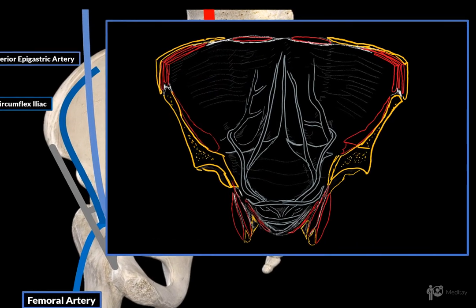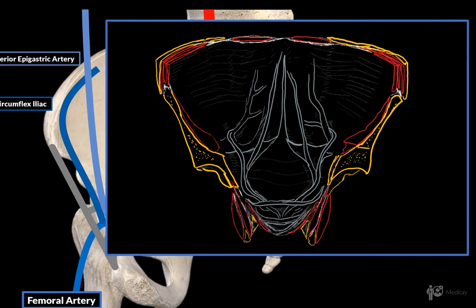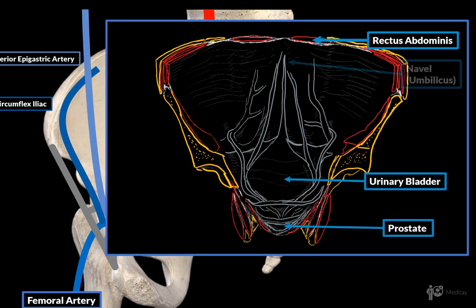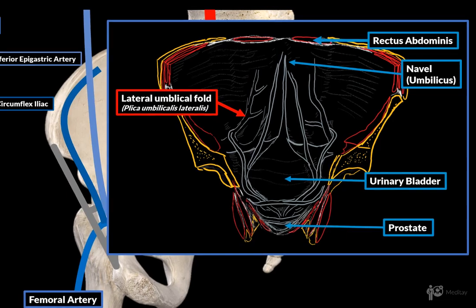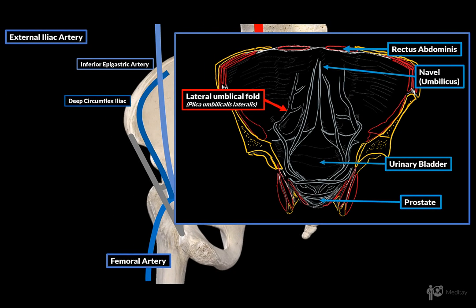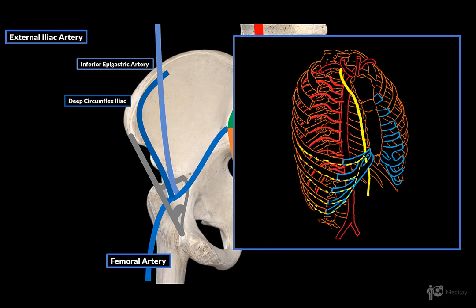Here is basically the anterior abdominal wall, with the rectus abdominis muscle, the urinary bladder, the prostate, and the navel. On the side you'll see a fold called the lateral umbilical fold, or plica umbilicalis lateralis in Latin. The inferior epigastric artery will travel within this layer, the lateral umbilical fold, and then eventually communicate with the superior epigastric artery.